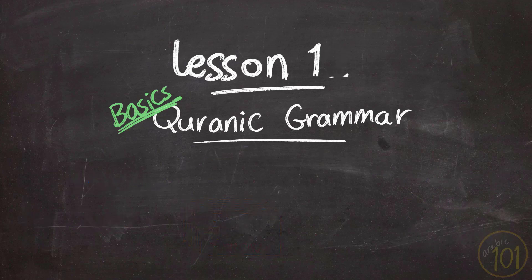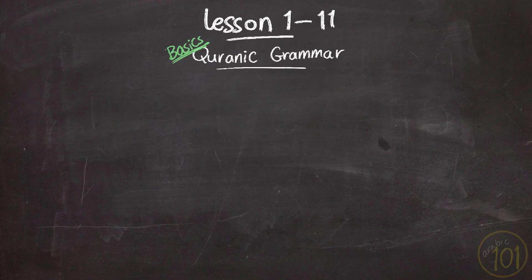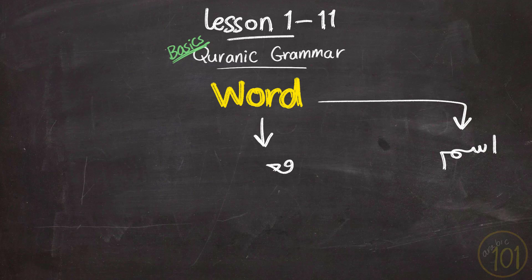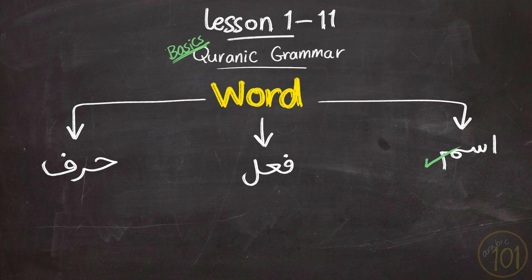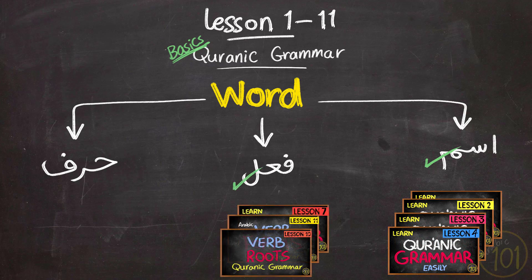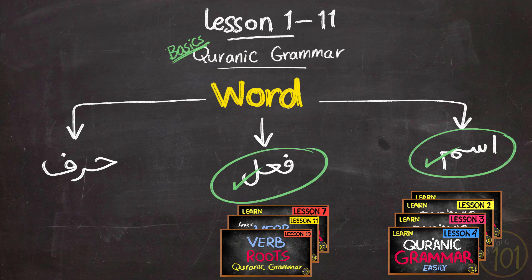So what have we done in the past 11 lessons? We learned that in Arabic, any word is either ism, fi'l, or harf. We have analyzed the basic rules relating to ism, and we've also learned a lot about Arabic verbs and how they are derived. If you want to revisit them or learn from the beginning, I will leave their links in the description.